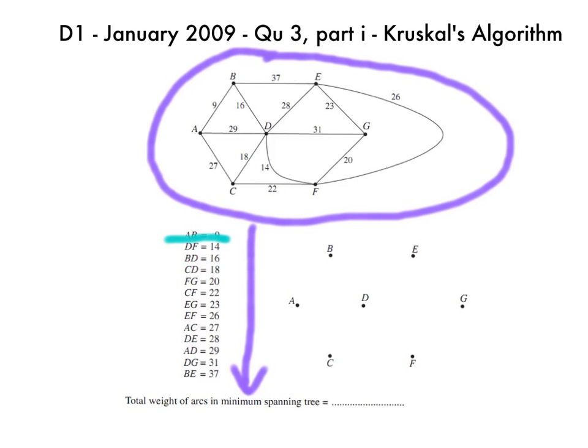So if we just kind of go through the list, 9 is the smallest one, so we add that arc there and 14 is next, we cross them off and add them as we go. 16 is next, so that's that one there, then 18 is next on the list, which is that one there, and then we've got FG, which is 20, so cross that out, and CF.